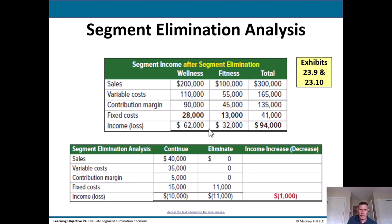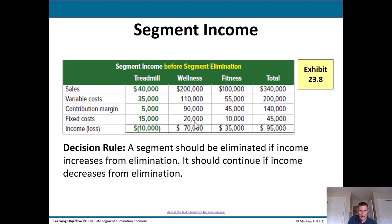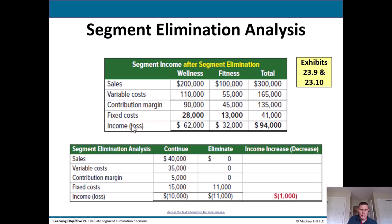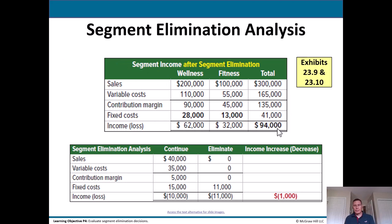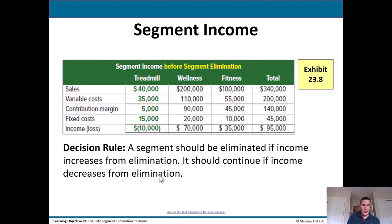Looking more closely: if the treadmill segment is eliminated, its $15,000 in fixed costs must be reallocated — wellness goes from $20K to $28K in fixed costs, and fitness goes from $10K to $13K. As a result, total income drops from $95,000 to $94,000. So eliminating the treadmill segment is not a good idea here because those fixed costs cannot be avoided.